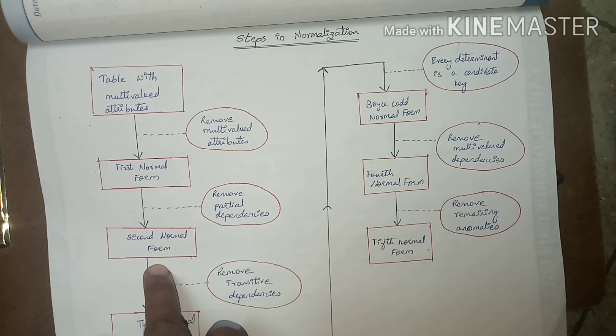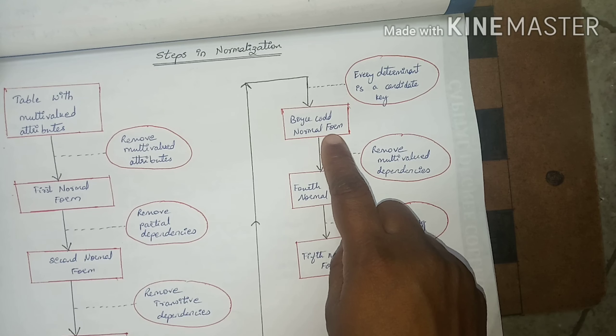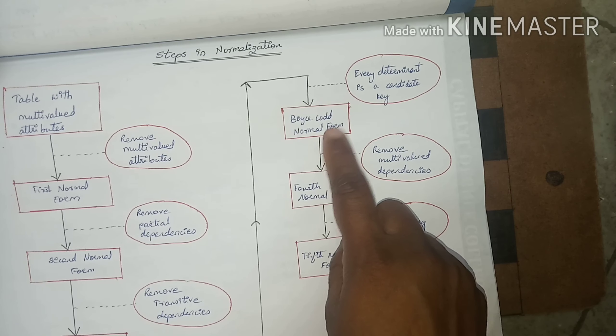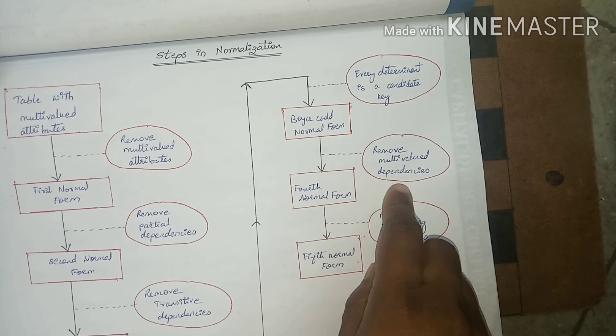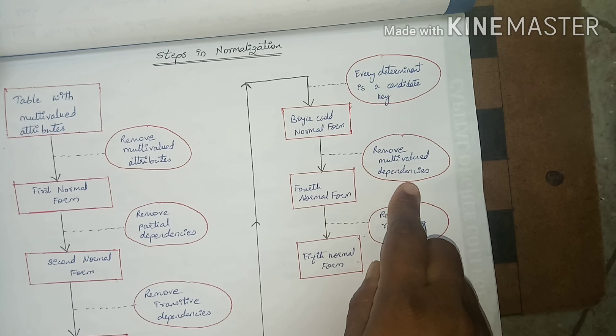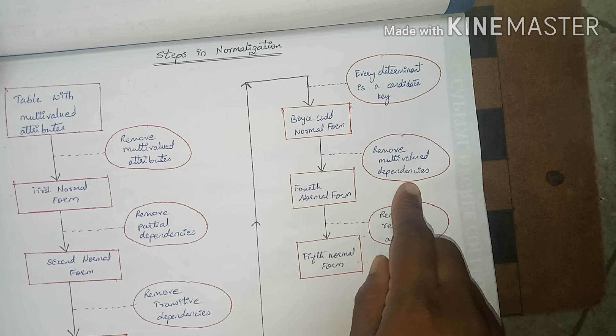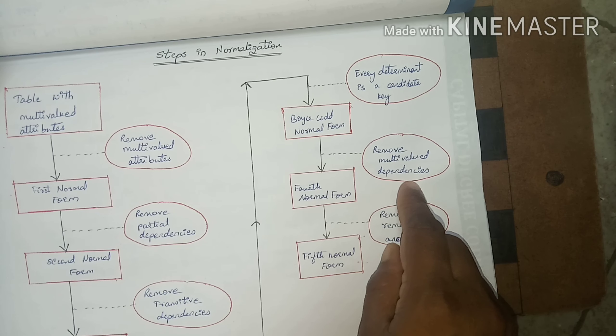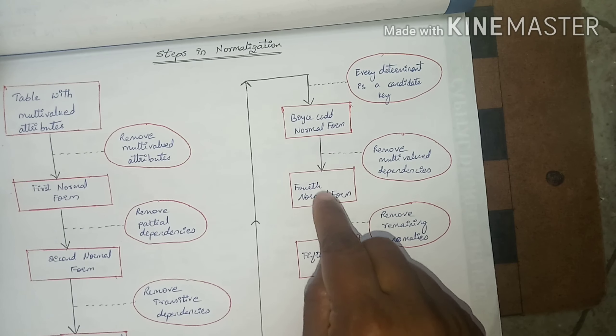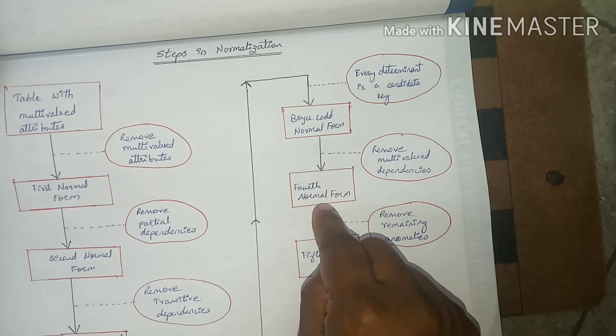The table in Second Normal Form will then be in Third Normal Form. In Third Normal Form, if we prove every determinant is a candidate key, then the table will come into Boyce-Codd Normal Form (BCNF). The BCNF table will be in Third Normal Form.